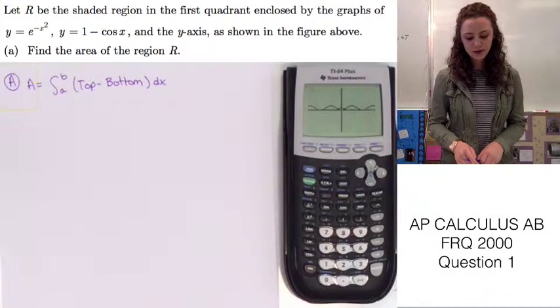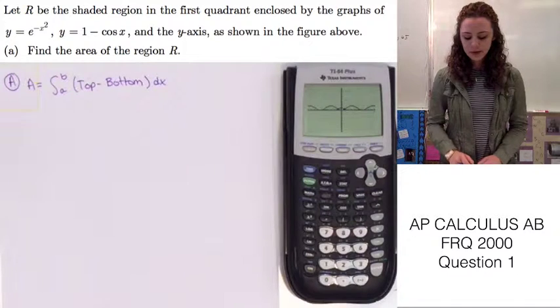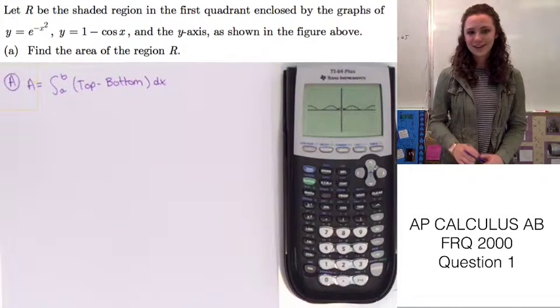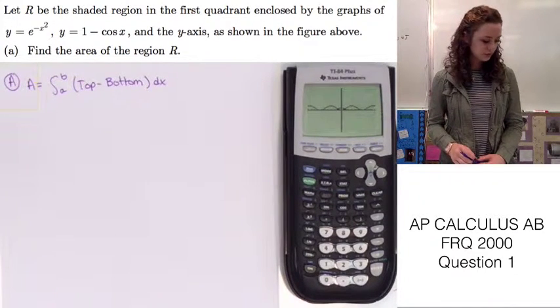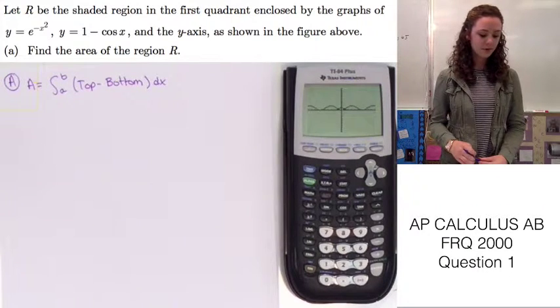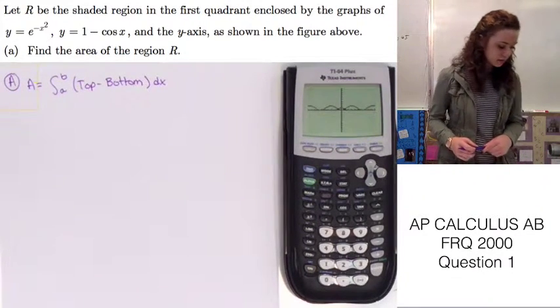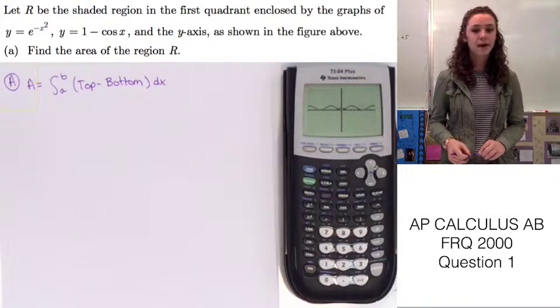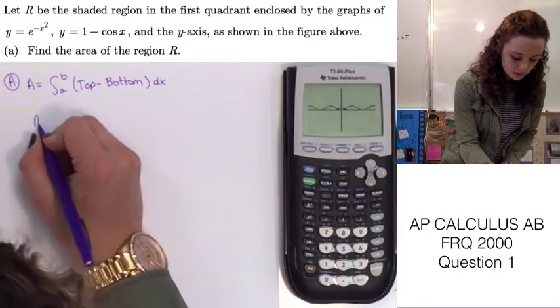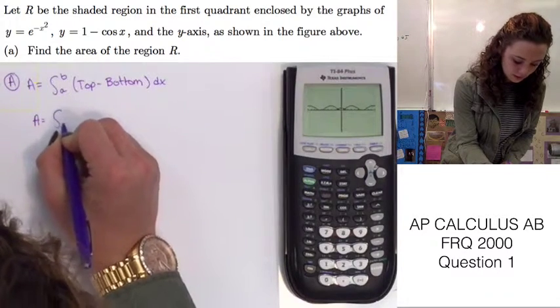Once it finishes graphing we're going to use the calculation function on the calculator to find the points of intersection so that we can find the upper limit because we can see clearly that the lower limit is at zero. Because it says it's bound by the y-axis so we know that it is going to be zero. So let's go ahead and write that down.